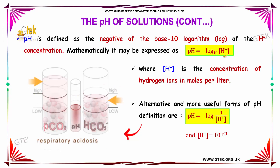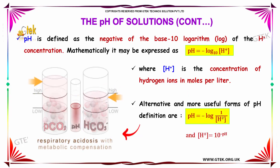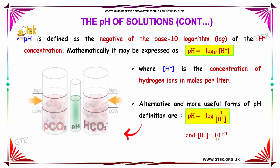Alternative and more useful forms of the pH definition are: minus log of 1 by H+, where H+ equals 10 to the power of minus pH.